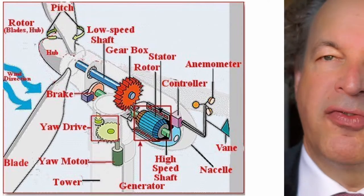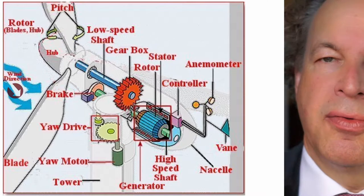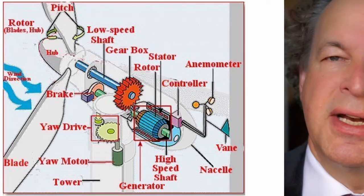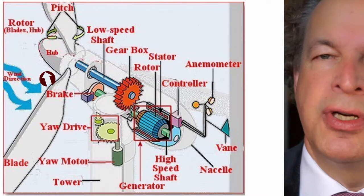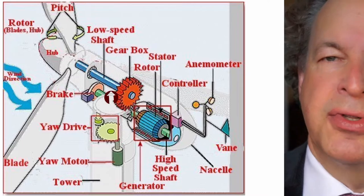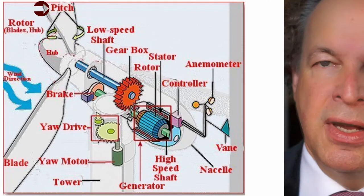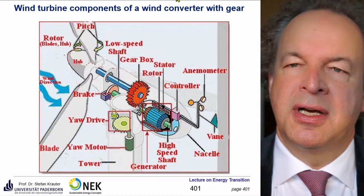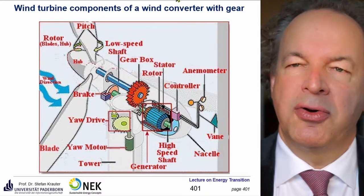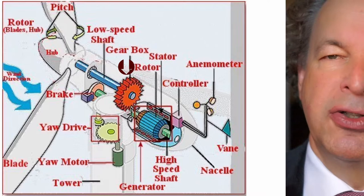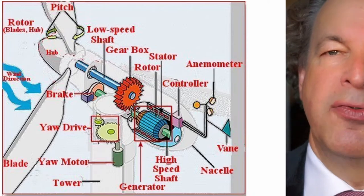Here you see the components of a wind power converter with a gear; a more modern one can work without a gear. The wind is captured by the blades, which have an aerodynamic form creating a lift and a moment to turn the turbine around the axis. You can adjust it at all modern windmills by the pitch. Then you have the low speed shaft, while normal generators with pole pairs of one or two need either 1500 or 3000 RPM. You have to have a gear to do that, or you have a special generator with many poles, so you can work with a low speed shaft.